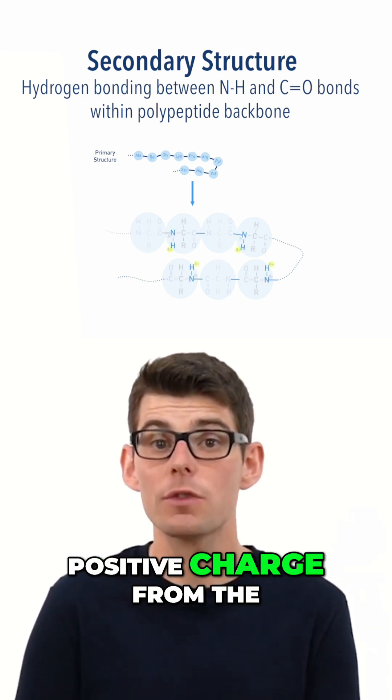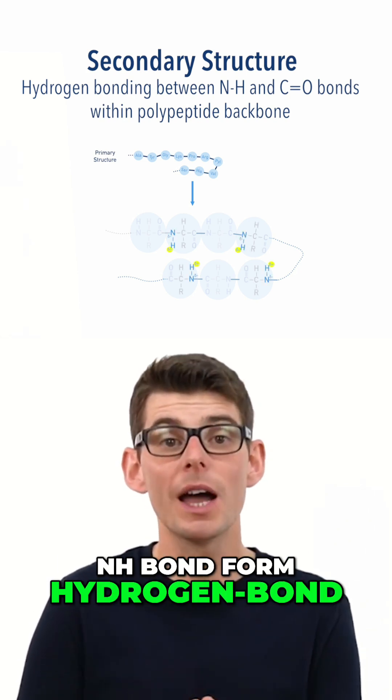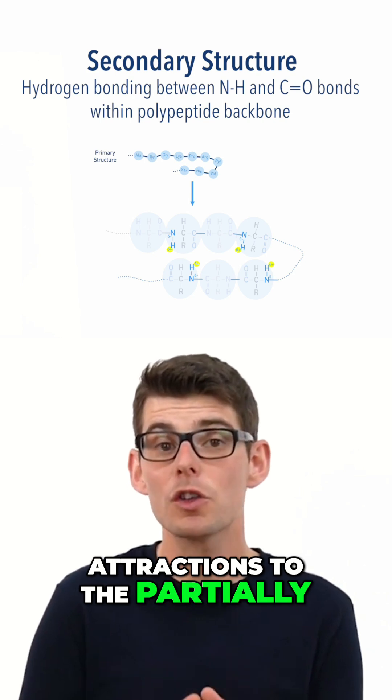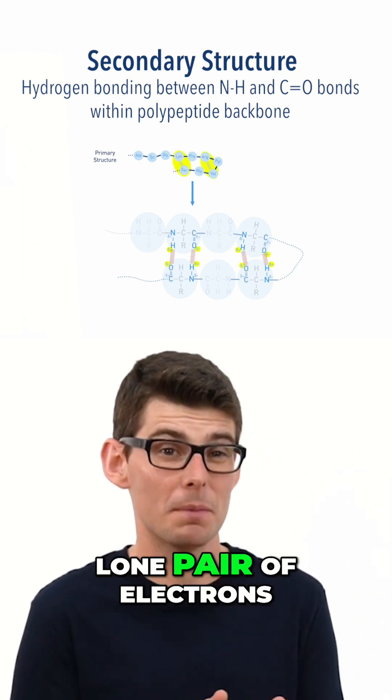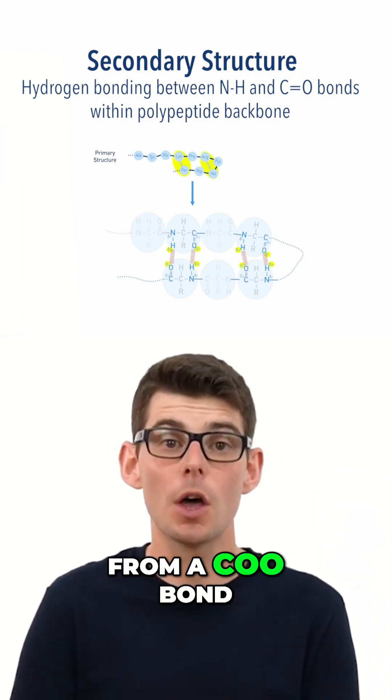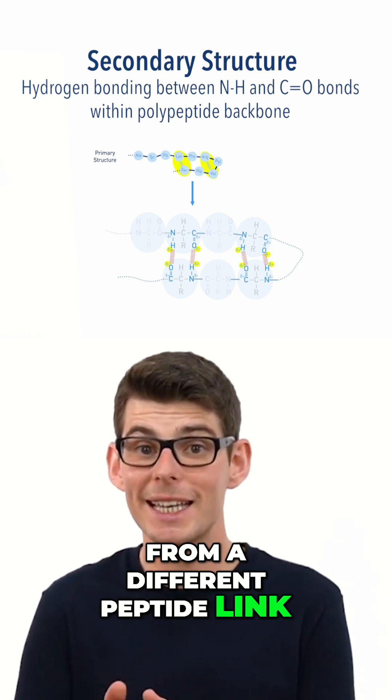Hydrogens with a partial positive charge from the NH bond form hydrogen bond attractions to the partially negative oxygen with a lone pair of electrons from a C double O bond from a different peptide link.